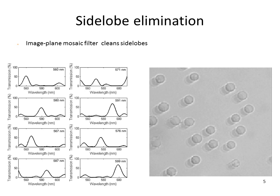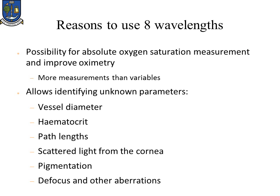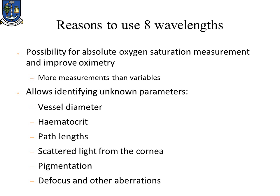The ghost image is created by those sidelobes. With the introduction of a mosaic filter, we basically eliminate those sidelobes, and then we clean the image. And we can properly analyze it in terms of spectrum and also spatially.